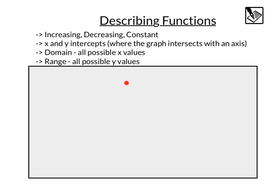Let's look at some different ways that we can describe functions. First we could say increasing, decreasing, or constant from left to right. Is it going up, going down, or staying the same? We can talk about x and y intercepts. That's where the graph intersects with the x axis or the y axis. This word domain refers to all possible x values of the function, and range refers to all possible y values of a function.